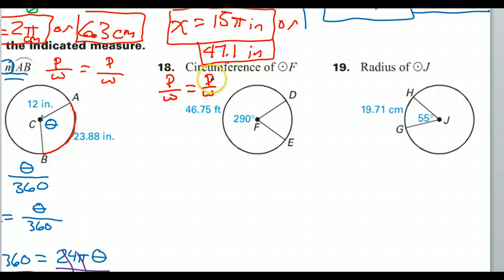Normally on the right hand side we do partial degrees divided by total degrees. So let's see, do we have partial degrees, do we have total degrees? Well, yes we do. The partial degrees are 290 degrees.